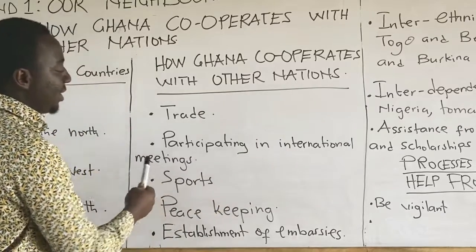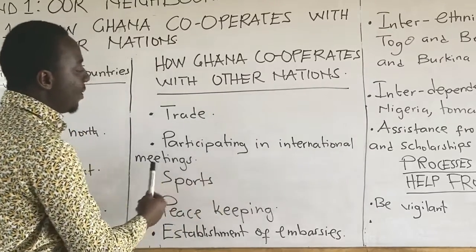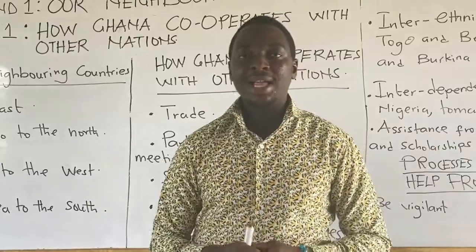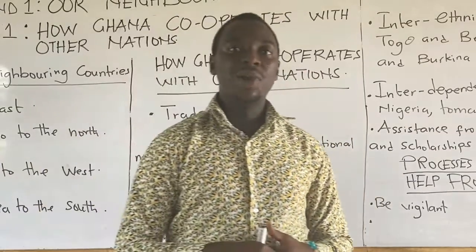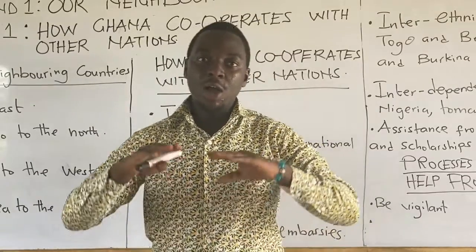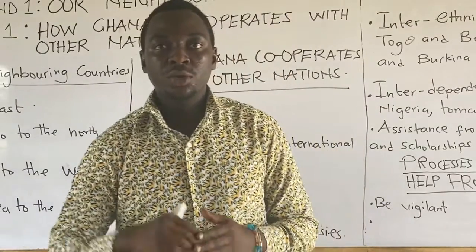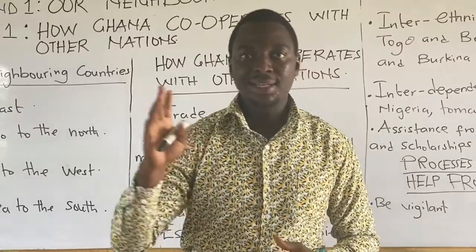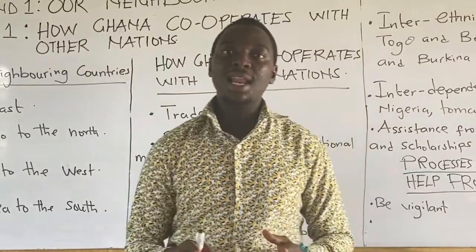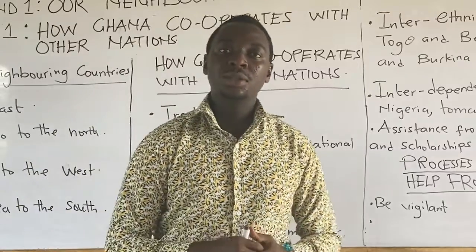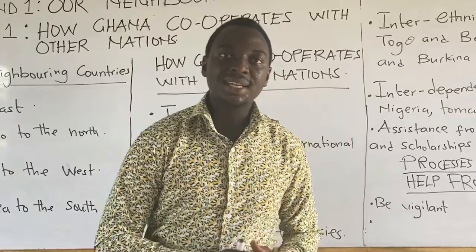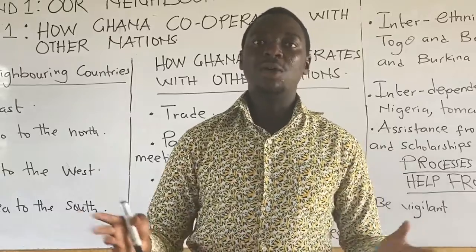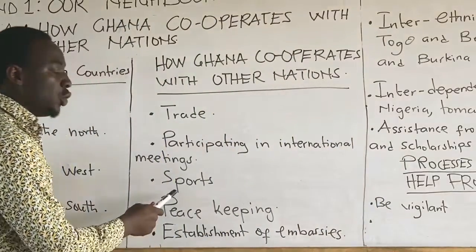The second point is participating in international meetings. Ghana attends meetings at the African level and worldwide, like ECOWAS meetings. We mostly see our president representing Ghana at the ECOWAS level and at United Nations meetings. Through this, Ghana cooperates with other nations, as Ghana's president helps other countries overcome their challenges, and they also help Ghana through various means.